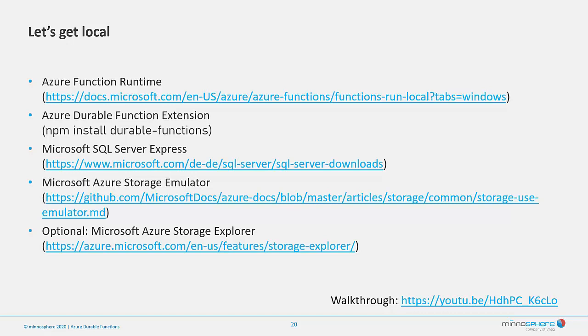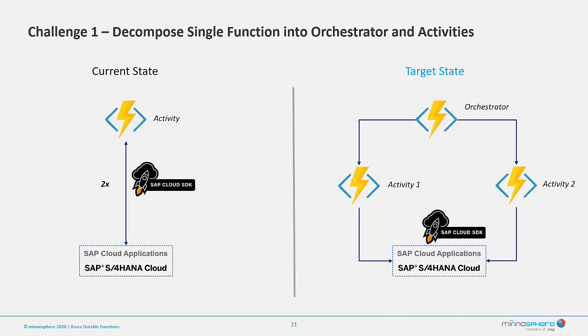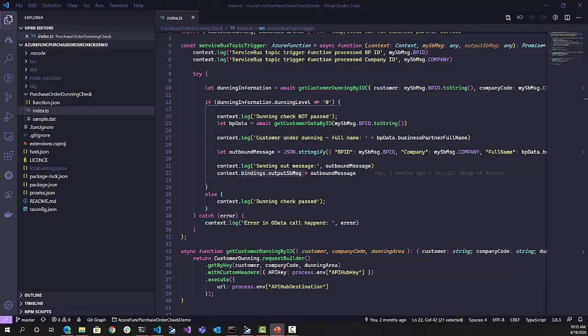Now let's pick up some challenges and evolve our project from one simple Azure Function to a more sophisticated durable function. First, I have one single activity function that calls the S/4 system twice from one activity — not ideal. What I want to do in this first step is use the durable function framework to orchestrate those two calls, resulting in an orchestrator that triggers one activity calling the S/4 system, and upon completion calls a second activity that also calls the S/4 system. Let's look at how this looks in code.